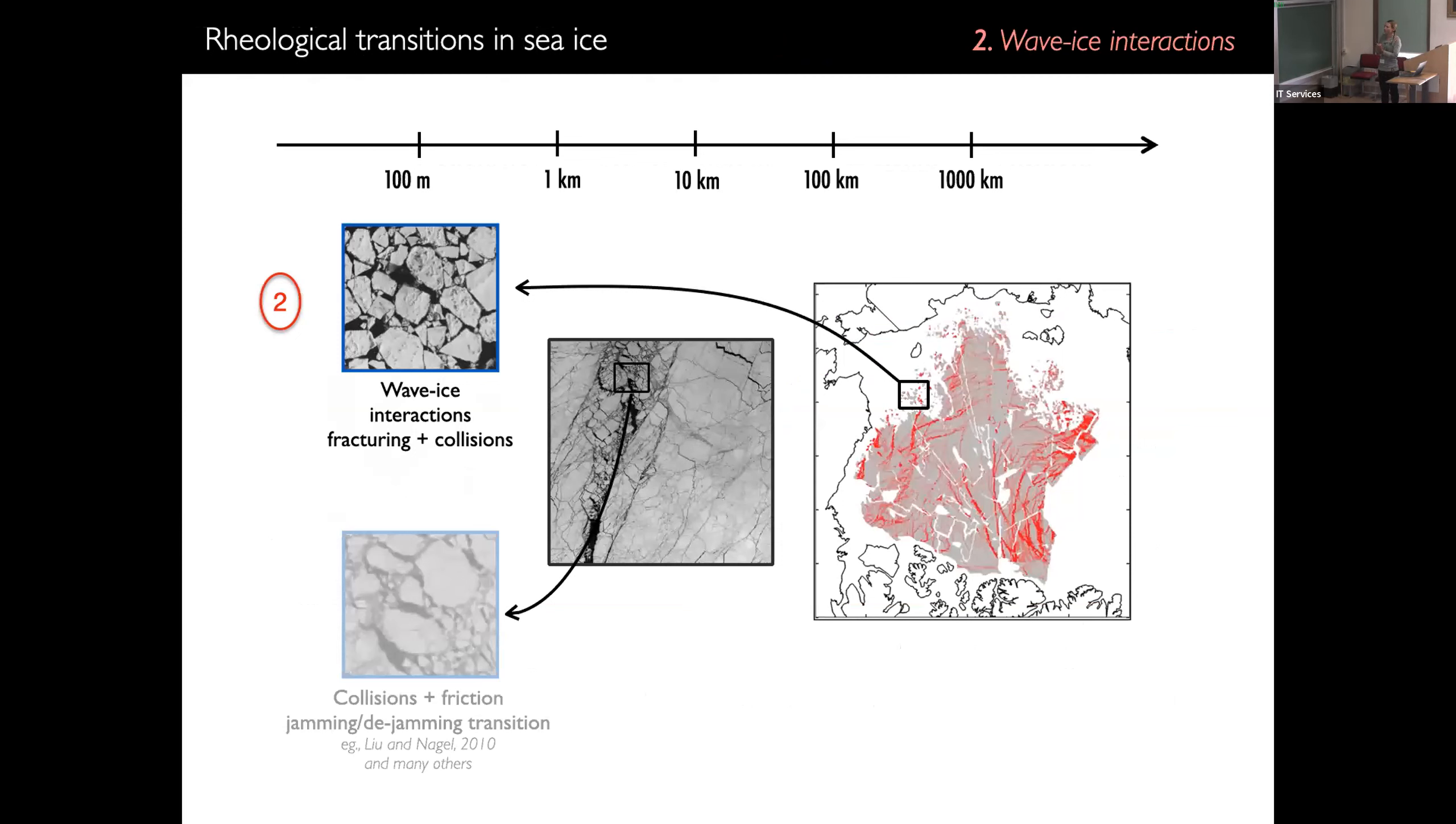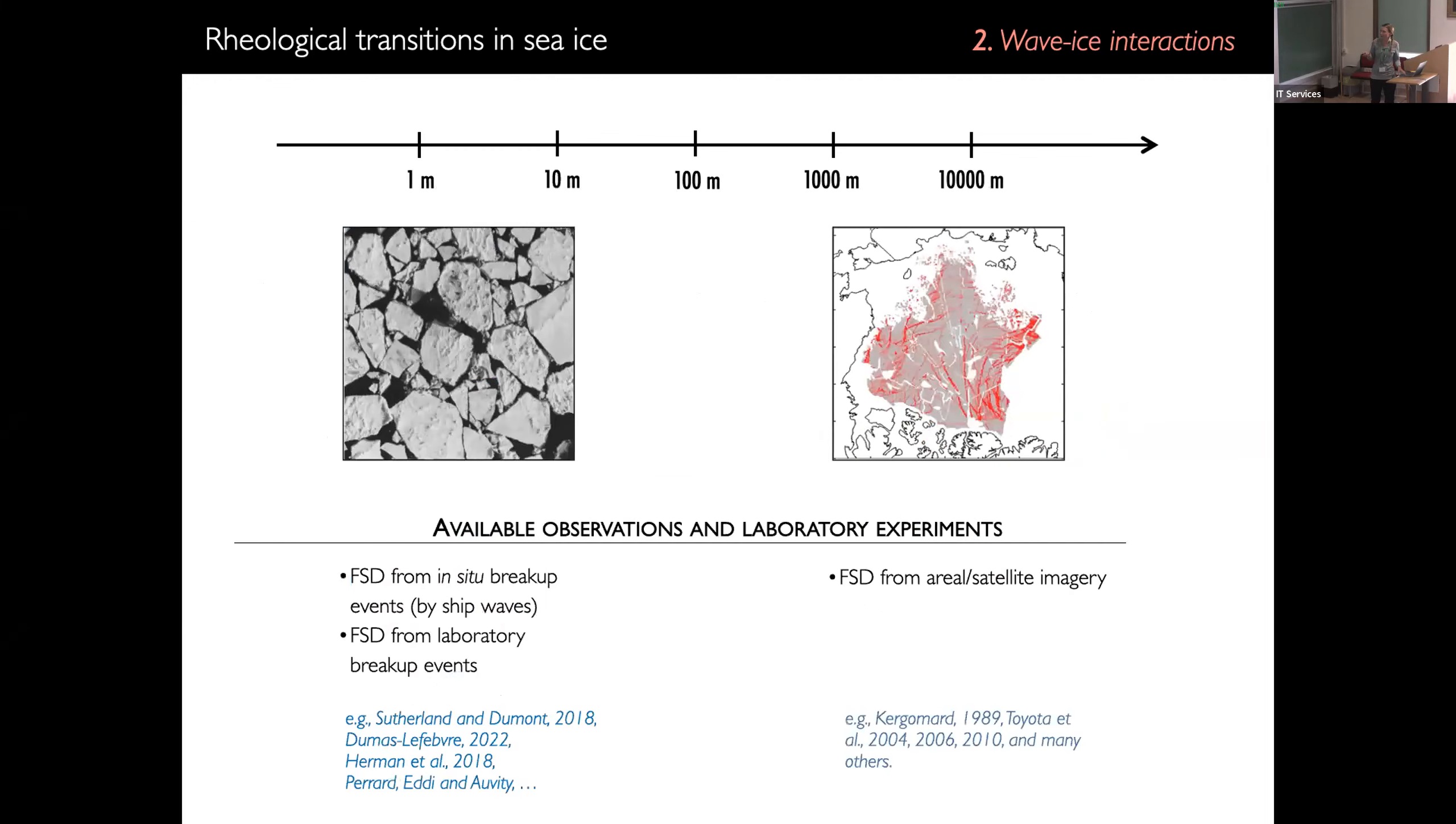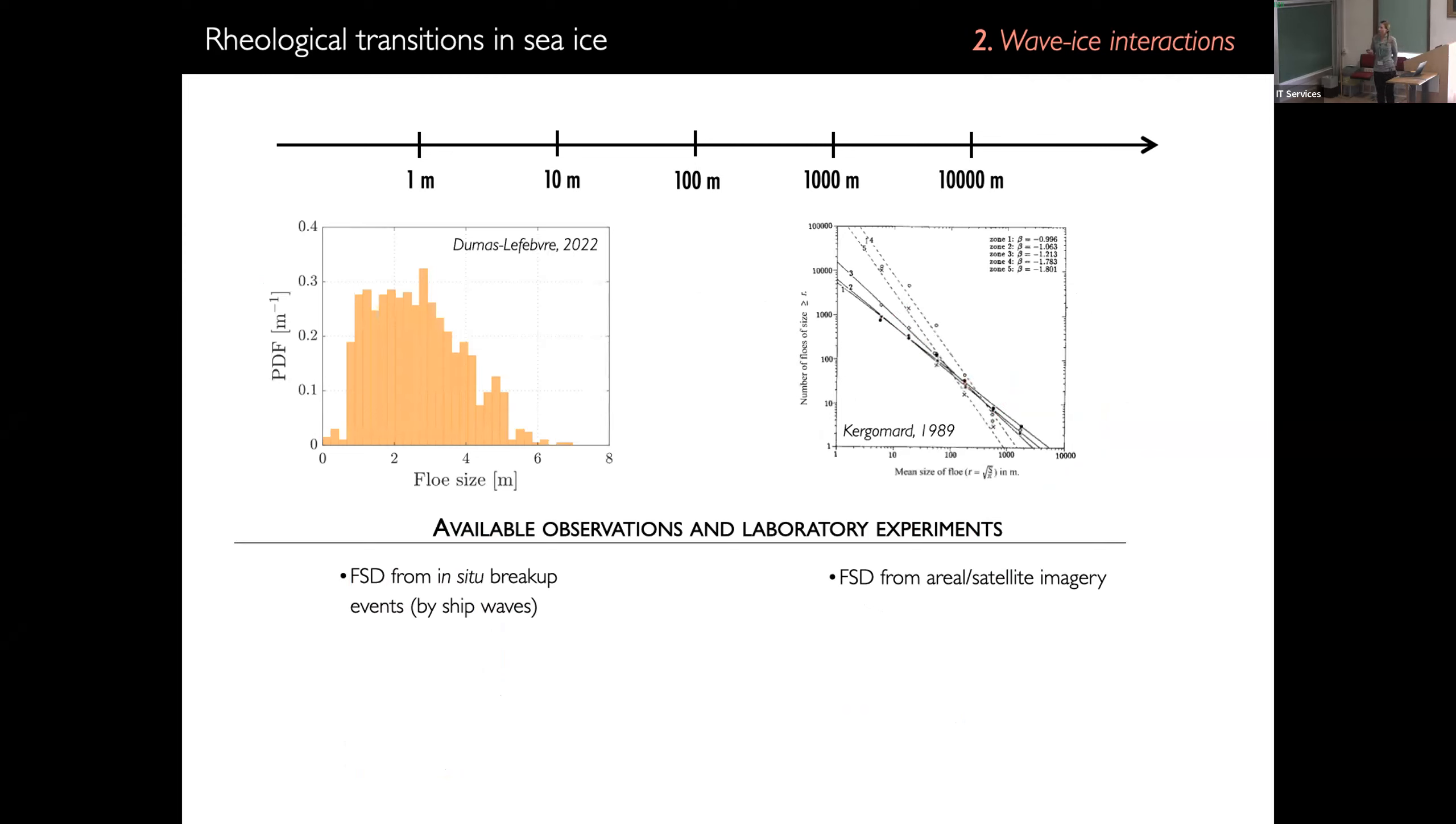And then there's the second granular phase that we want to treat. And this one is associated with the MIZ and the wave-ice interaction. And again, to do that, what we would want to do is to base the formulation of our parametrization solely on observations. But we can't do that. So we have observations at a small scale. We have other observations of the FSD from satellite or aerial imagery at the larger scale. But the thing is, they don't give us the same answer in terms of the floe size distribution. For instance, here is a distribution that was obtained after a breakup event that was made with a ship. So that was measured in sea ice for a single breakup event. And this is what we see if you just take an aerial picture of sea ice. So the distribution here is clearly modal. Here is the power law. And the question is, how does this power law distribution emerge at large scale?